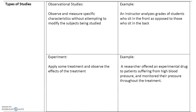An experimental study is a study in which the experimenter applies some kind of treatment and observes the effects of the treatment. For example, a researcher offered an experimental drug to patients suffering from high blood pressure and monitored their blood pressure throughout the treatment.